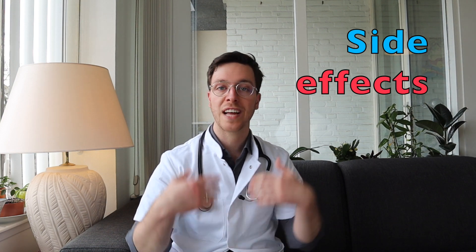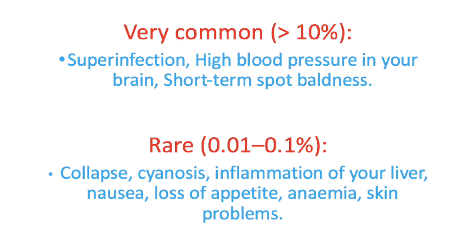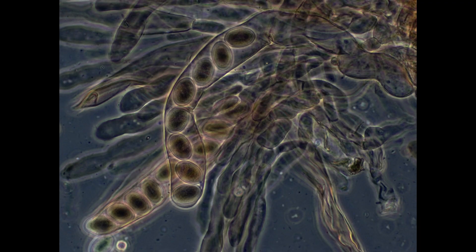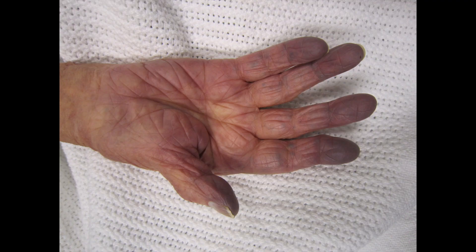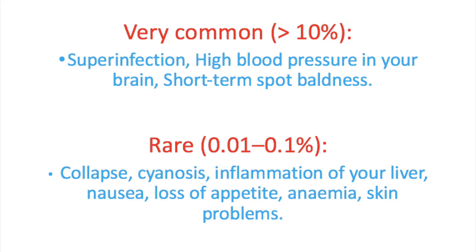Now for the side effects of nitrofurantoin — I'll discuss the most common ones. Very commonly, more than 10% of all patients will experience a superinfection by a fungus or resistant bacteria, which can cause additional complaints. Nitrofurantoin can also cause a harmless high blood pressure in your brain and short-term spot baldness. Rarely, it can cause a collapse, cyanosis — this is when your skin has a low oxygen level and therefore turns bluish — inflammation of your liver, nausea, loss of appetite, anemia, and skin problems.